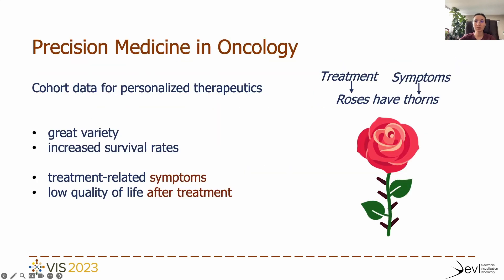Precision Medicine in Oncology is an emerging approach that focuses on data from cohorts in addition to the information of individual patients to create personalized therapeutics. Despite increasing survival outcomes in many patients, treatment leads to symptoms that greatly affect quality of life for years after the completion of treatment.